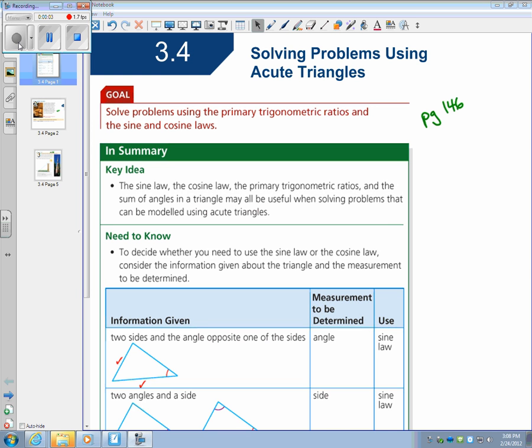Today we're doing 3.4, Solving Problems Using Acute Triangles. So we're going to use trig ratios, we're going to use sine, cosine, and tan. And we're also going to use these new laws we learned, the sine and cosine law.